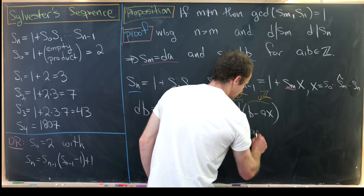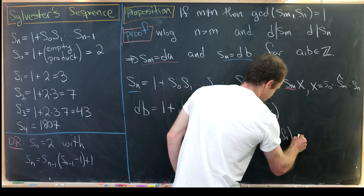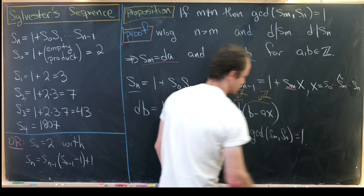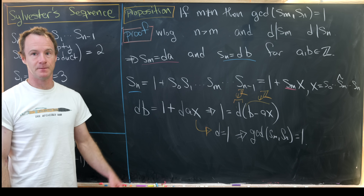We took any common divisor of S_m and S_n and showed it had to equal one, which means the greatest common divisor of S_m and S_n is also equal to one, as needed.